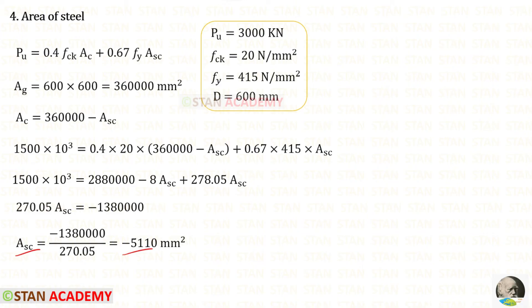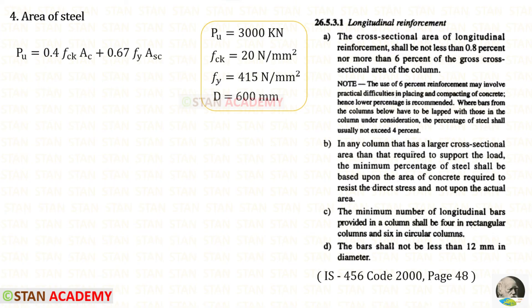Let us open this book, page number 48. In any column that has a larger cross-sectional area than that required to support the load, the minimum percentage of steel shall be based upon the area of the concrete required to resist the direct stress and not upon the actual area. That means in this formula we should not consider this term.